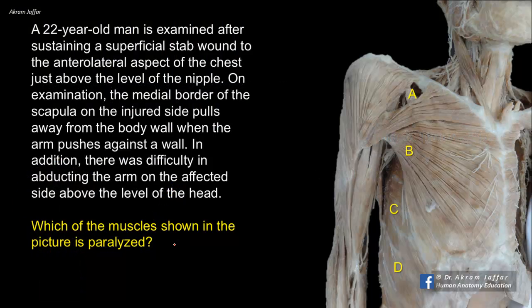A 22-year-old man is examined after sustaining a superficial stab wound to the anterolateral aspect of the chest just above the level of the nipple. On examination, the medial border of the scapula on the injured side pulls away from the body wall when the arm pushes against the wall. In addition, there was difficulty in abducting the arm on the affected side above the level of the head. Which of the muscles shown in the picture is paralyzed?